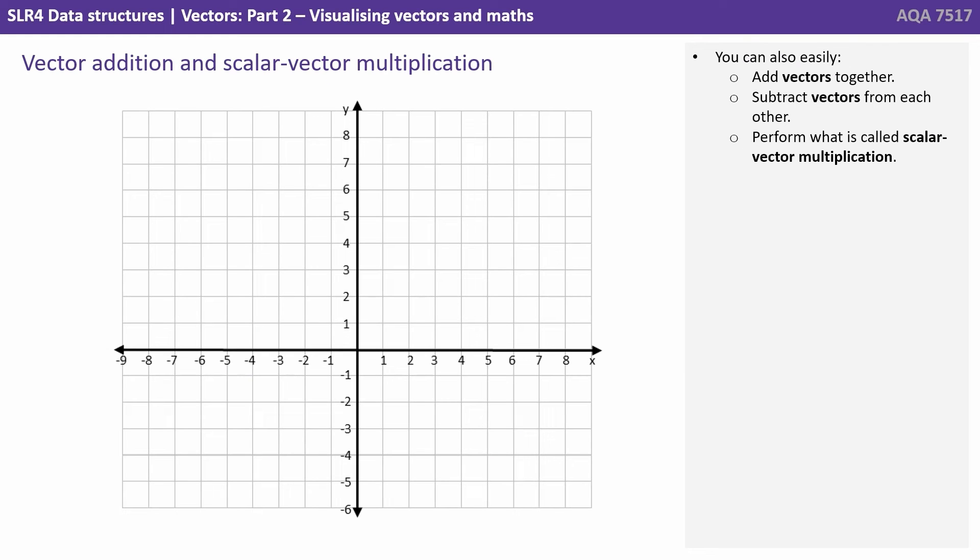You can also easily add vectors together, subtract vectors from each other, and perform what is called scalar vector multiplication.